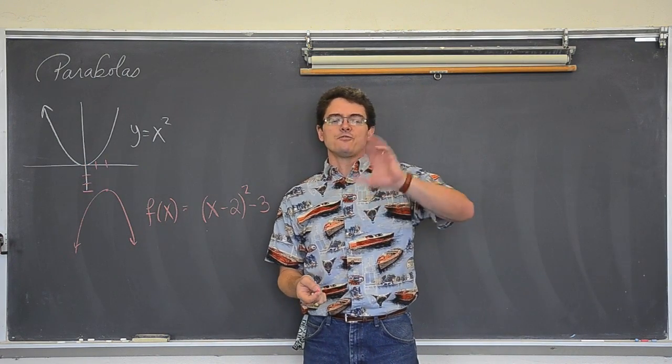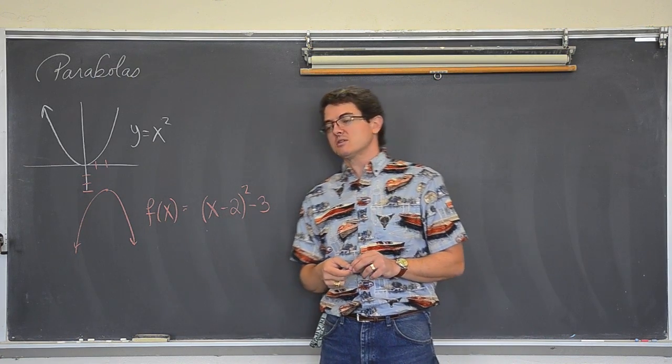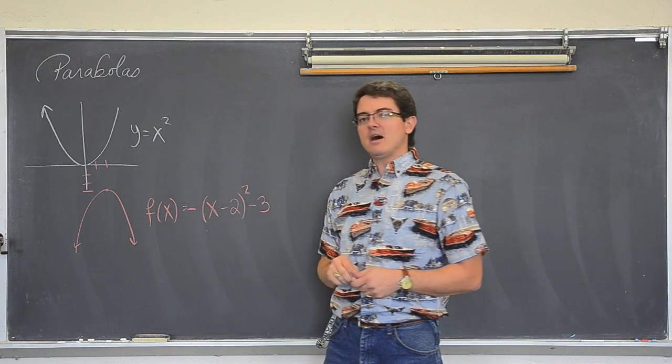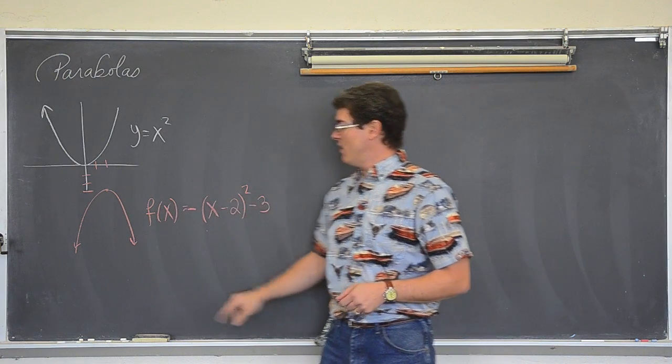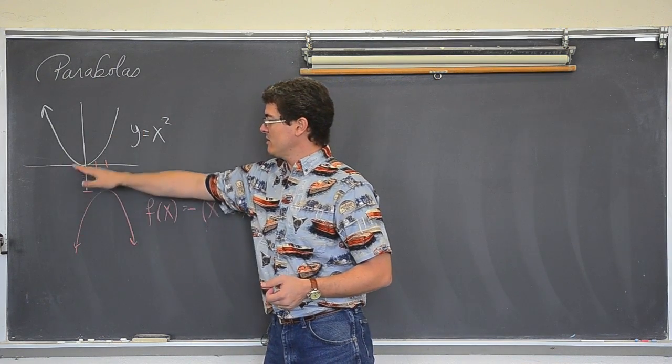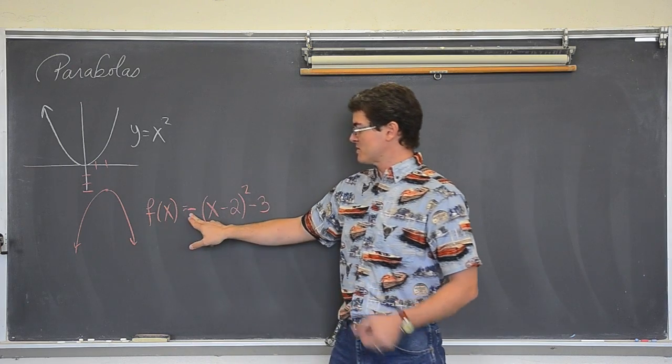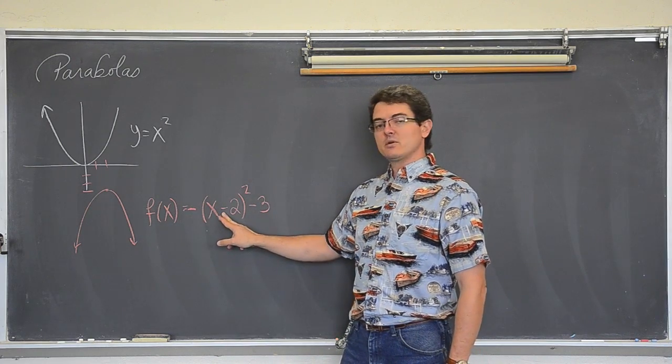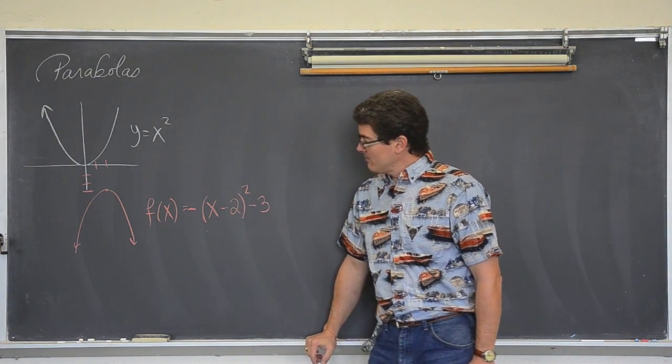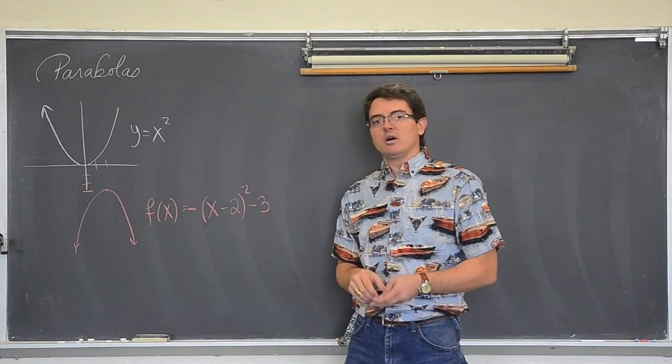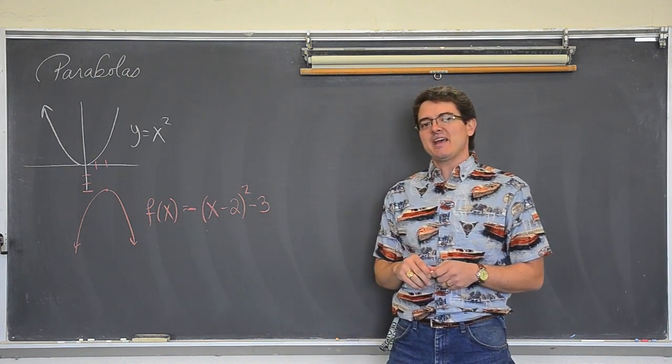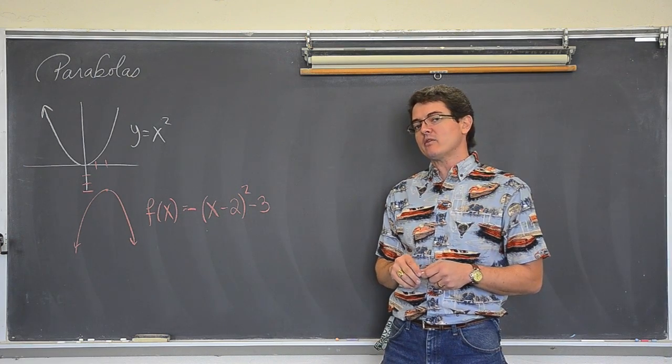Now what caused the vertical flips when we studied transformations of functions? That was when your graph started off with a negative value. So this red equation now is the equation of this parent function, which is a parabola flipped down, moved to the right two, and moved down three. This was the vertical flip, the minus two is the movement to the right, and the negative three at the end was our shift down.